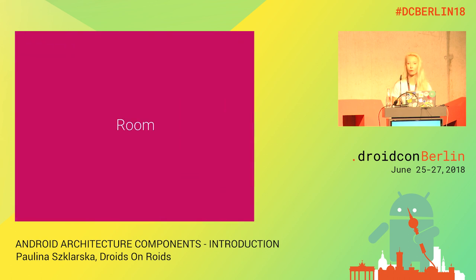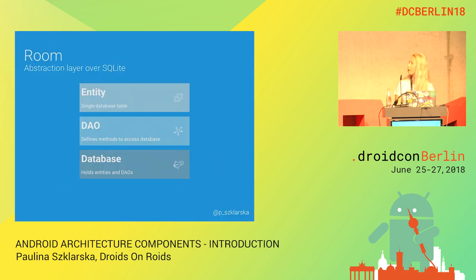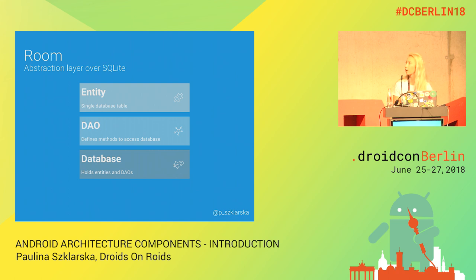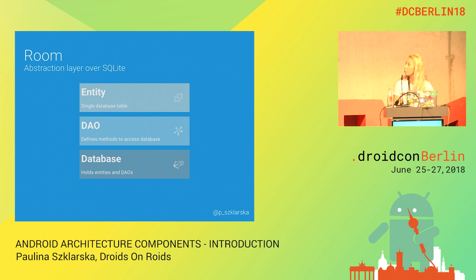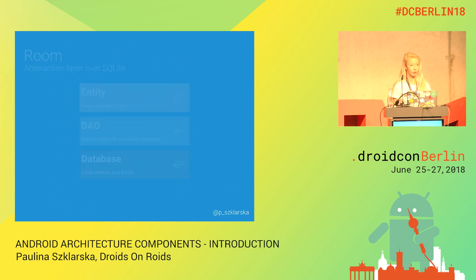We'll start with Room first. Room creates an abstraction layer over SQLite so we can use the database in a very easy way. In Room we have three main components: Entity, DAO, and Database, which are for storing and accessing data.